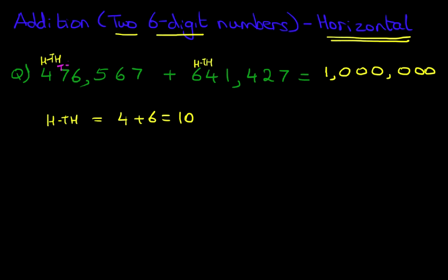Next we have the ten thousands. So let's write this down, part of our workings. Ten thousands we've got is seven plus four. Seven plus four is eleven. And that is eleven ten thousands, which becomes one hundred and ten thousand.